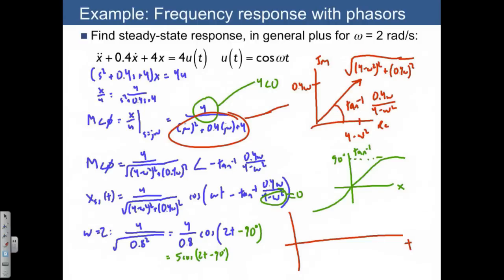Our input u of t is just equal to 1. It has a magnitude of 1. And it's just a sinusoid here. So this is our input u of t. And it has a period of 2 pi over 2. In other words, the period is equal to pi.